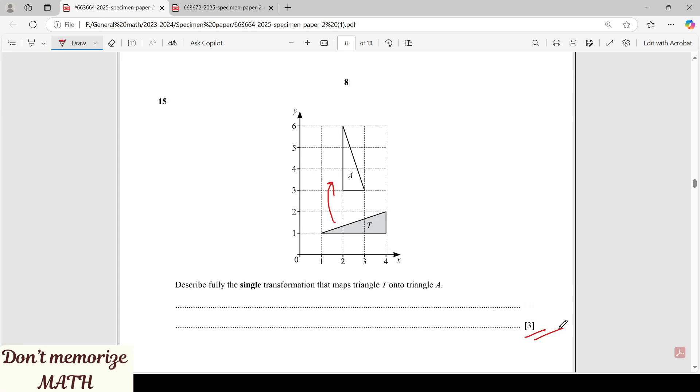We need to identify which type of transformation this is, and it depends on the transformation. Commonly we have reflection and enlargement.